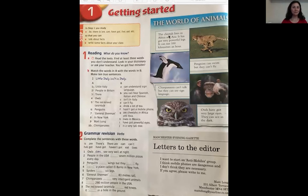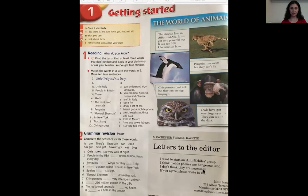The cheetah lives in Africa and Asia. It has got very powerful legs. It can run 100 kilometers an hour. Penguins can swim but they can't fly. Chimpanzees can't talk but they can use sign language. Owls have got very large eyes. They can see in the dark. 'I want to start an anti-mobile group. I think mobile phones are dangerous and I don't think that they are necessary. If you're free please write to me.' This is a letter from Matt Long from Manchester.